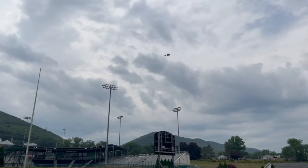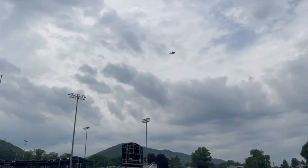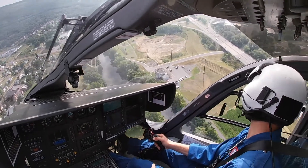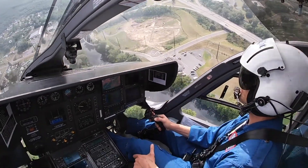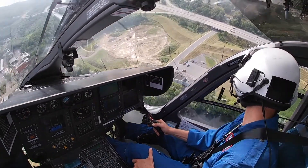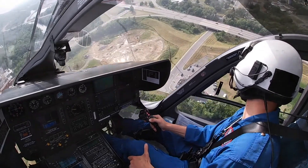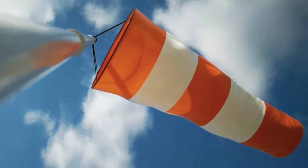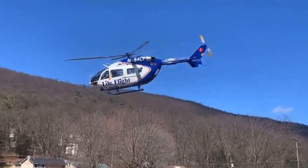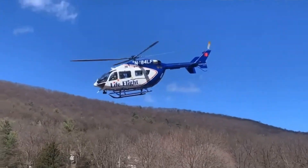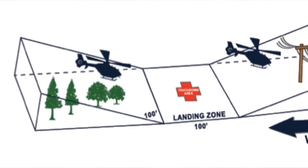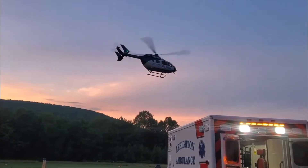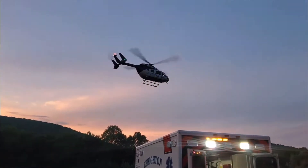Once the aircraft is on site and has identified the landing zone, we will do a large circle orbit prior to coming in to land. That's our opportunity to verify what you told us over the radio and get a good look at how we're going to approach the landing zone. Generally the helicopter likes to land into the wind, and we prefer an area without a lot of high obstacles, as the helicopter does not like to land or take off straight down and straight up — although we can, it's not the ideal method.